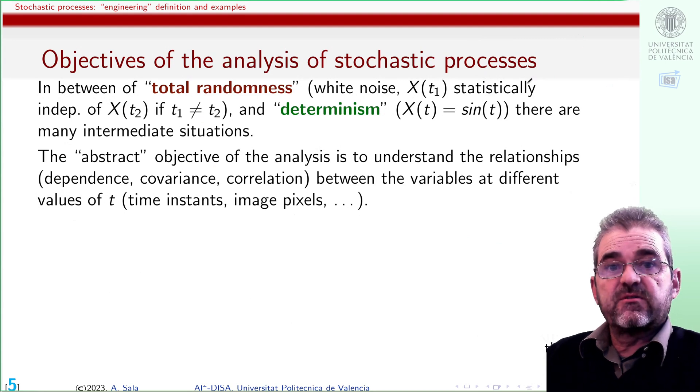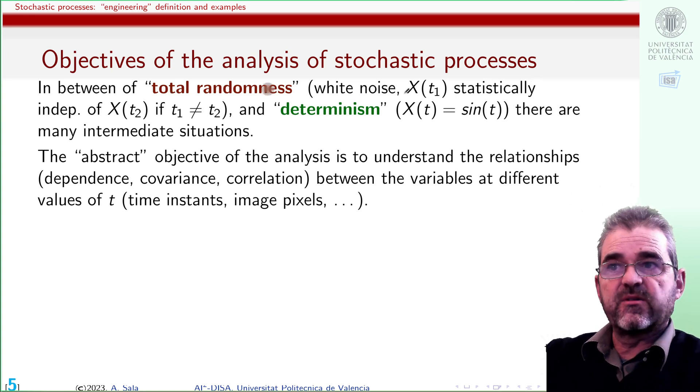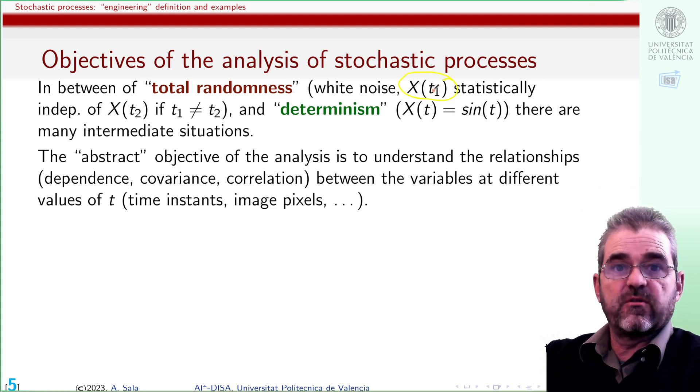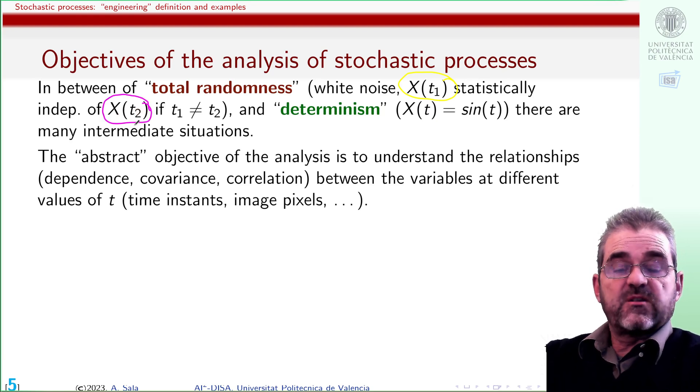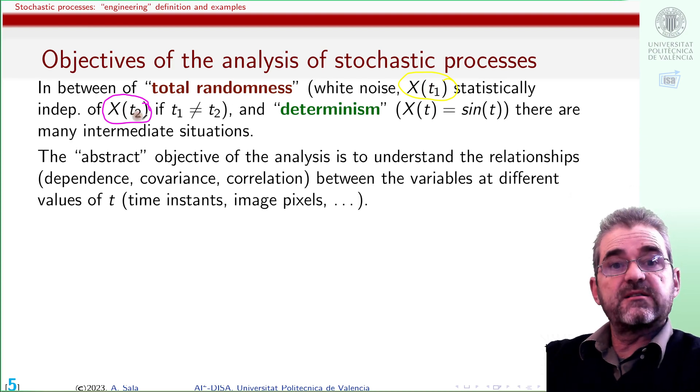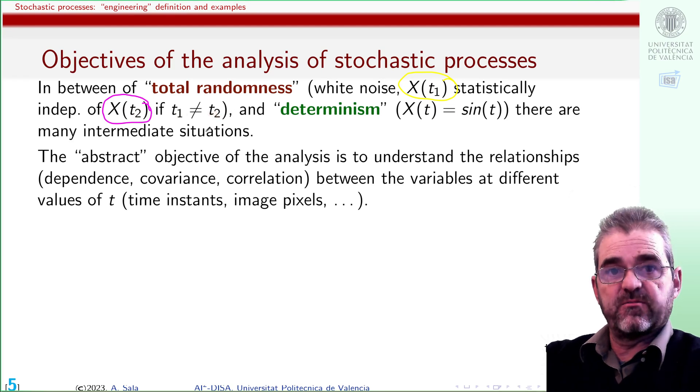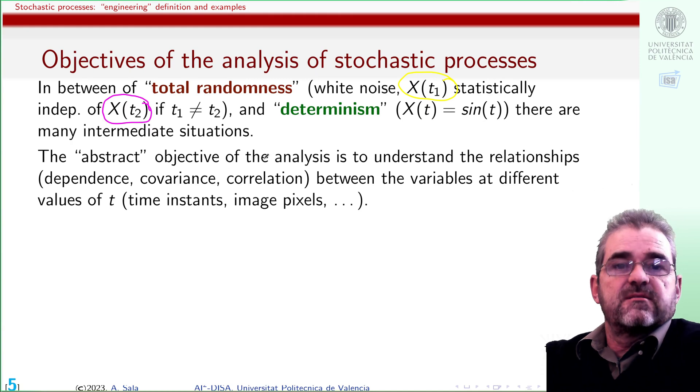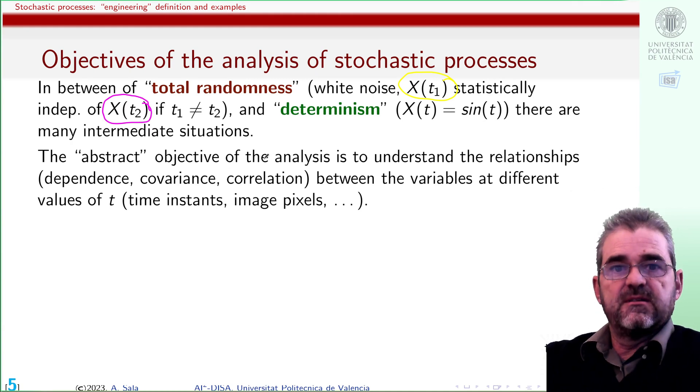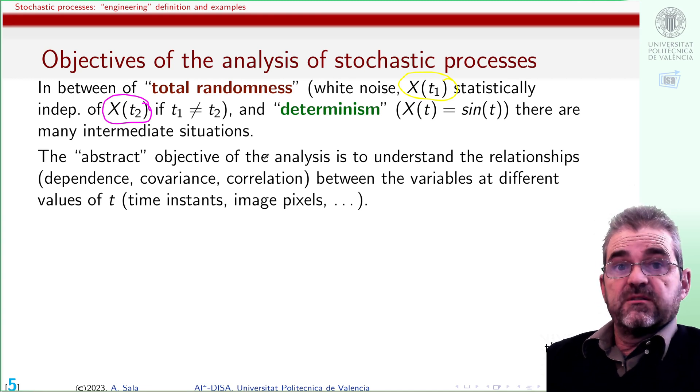Which are the objectives of all this? We have kind of two extreme cases. One could be total randomness, so that knowing the value of one variable at some instant or pixel is useless to predict the value at any other instant or pixel. That's white noise. The variable at t1 and that at t2 are statistically independent if they are referred to different instants or pixels. Then in this case, the arranging of this set of random variables is useless. The other extreme would be total determinism, in which I know that my random function is not random, it's sinus of t. Then also it's nonsense using any kind of statistics. I know it's sinus of t, I can take its third derivative or whatever.